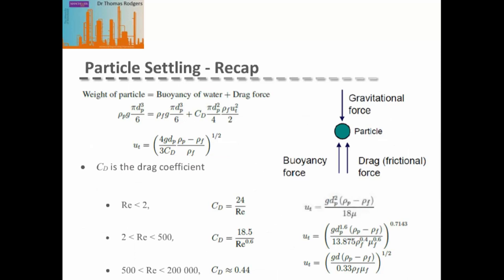As a recap from solid-fluid systems, a force balance on a settling particle shows that the weight of the particle equals the buoyancy force plus the drag force for the particle passing through the liquid. This equation can be rearranged to give the terminal velocity as a function of particle diameter, the density difference between the particle and the fluid, and the drag coefficient for the regime of settling.